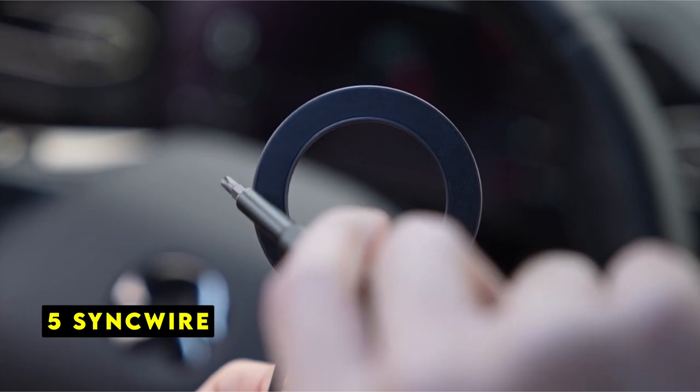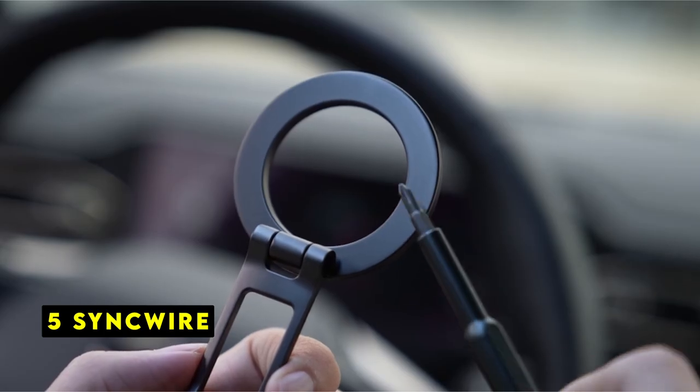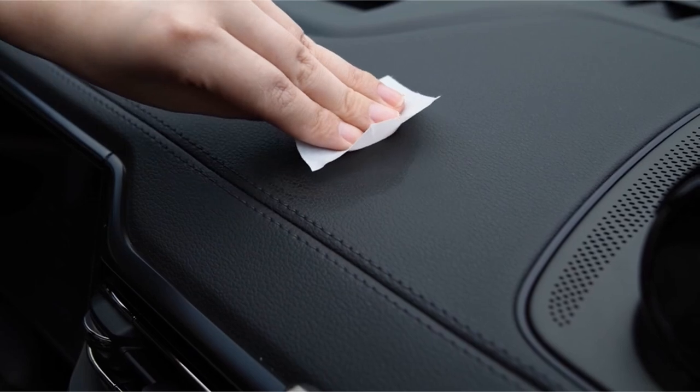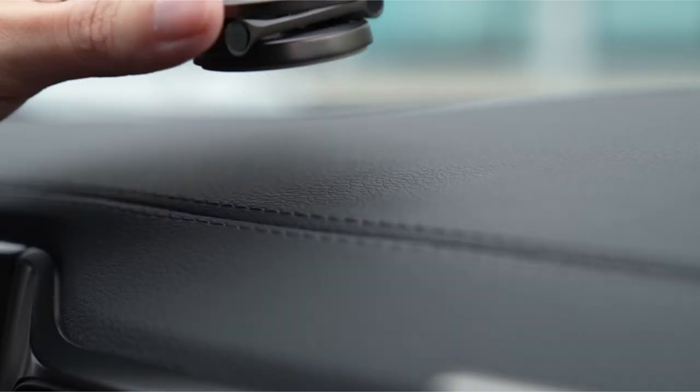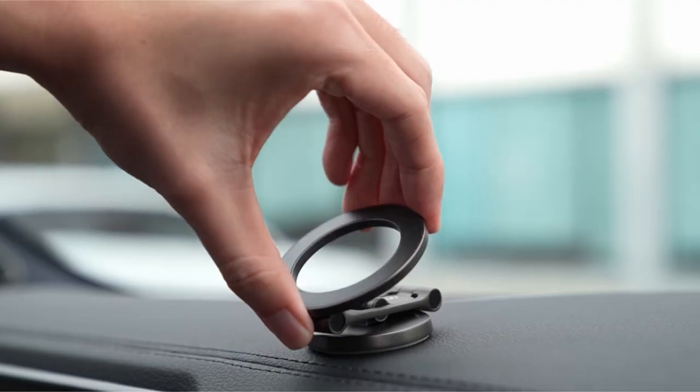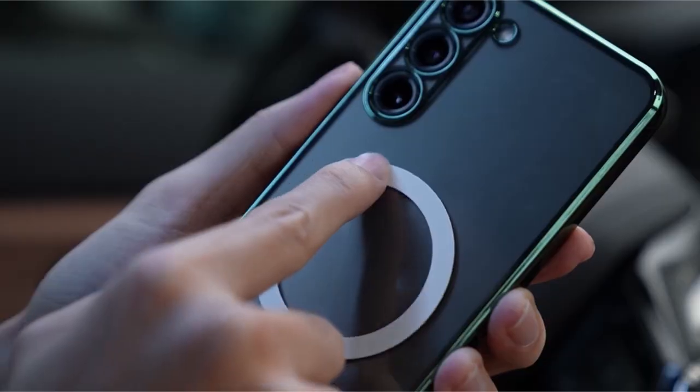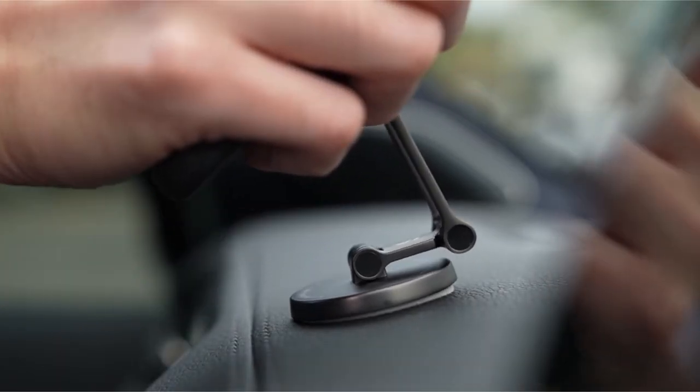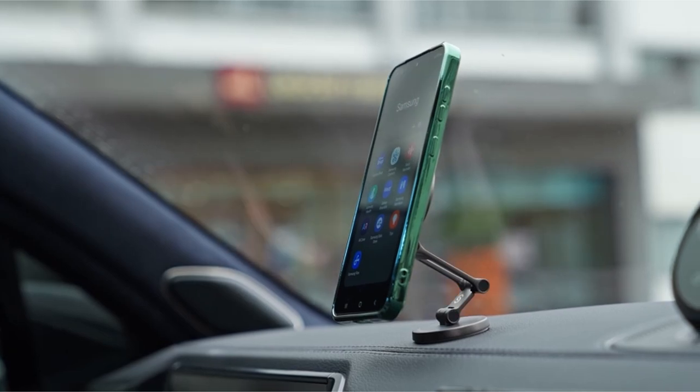At number 5 is SyncWire. The SyncWire MagSafe car mount is a testament to sleek design and practical functionality. Its 360-degree swivel and adjustable arm offer unparalleled versatility, allowing you to position your phone at any angle for optimal visibility. The magnetic attachment system is pure convenience, enabling one-handed operation with a secure hold.